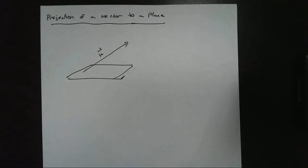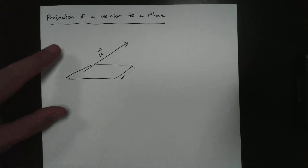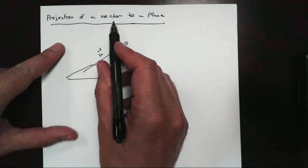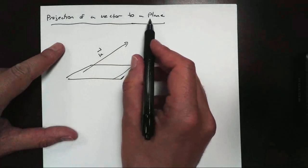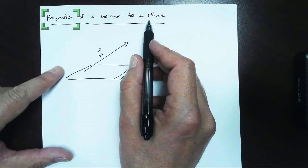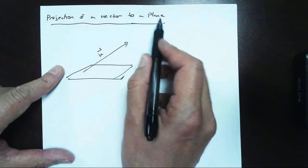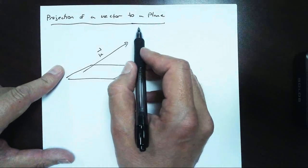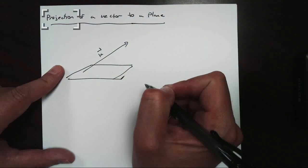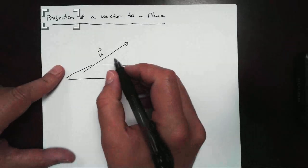We're going to find the projection of a vector to a plane. In an earlier video, we did the projection of a vector to a line. This is a little bit more complicated, same concept though.